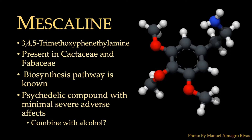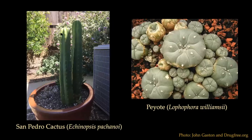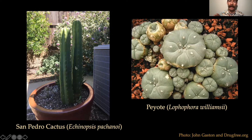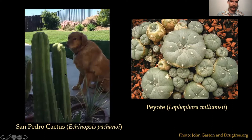There are different cacti that produce mescaline. One is the San Pedro cactus — a South American cactus that the Spaniards associated with going to heaven when consumed, seeing Saint Peter at the gates. The other most notably identified with mescaline is peyote. You can legally grow San Pedro cactus as long as you don't consume it. And here is our dog Cody identifying the mescaline cactus.